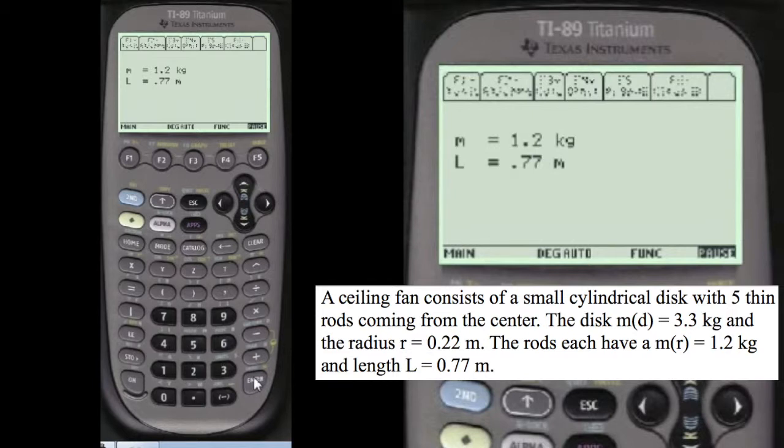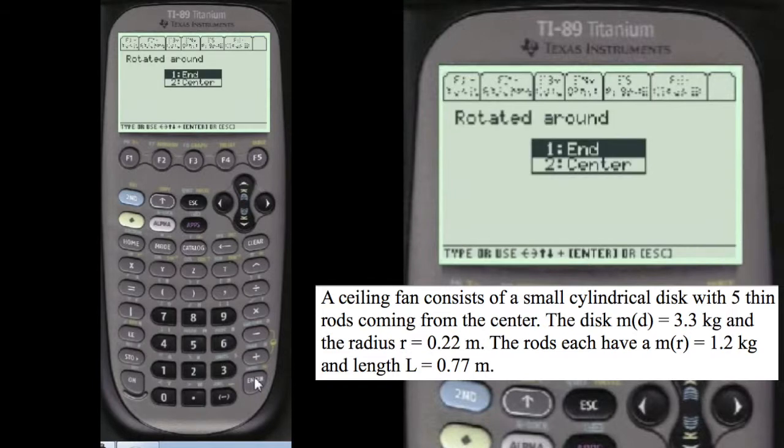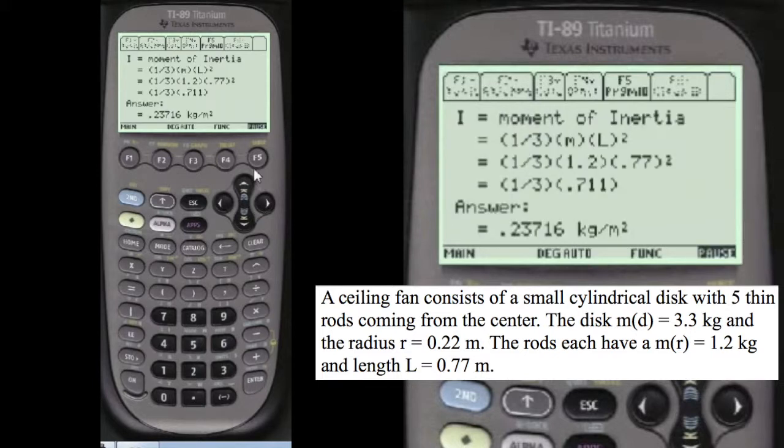I always show you what you've entered so you can change it if you want. I say it's okay. Now, with the rod, you can rotate it around the center, which is the center of mass, or the end. In this case, it's the end. Choose that one. And here's the answer, 0.23716 kilograms per meter squared.